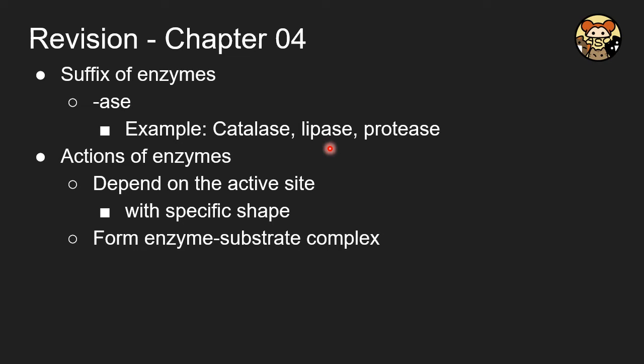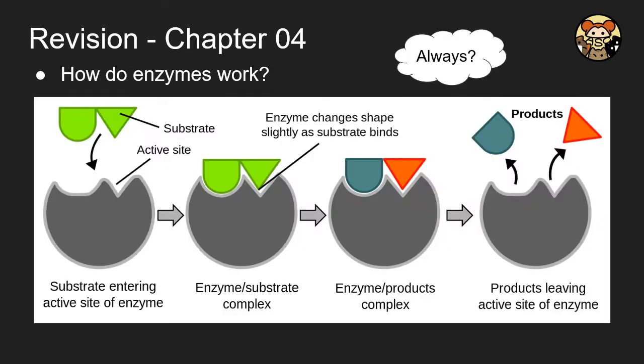For action of enzymes, it depends on the active site with its specific shape. It can catalyze the related reaction, and its method is to form the enzyme-substrate complex. In your answers, remember to include these terms like active site, specific, and enzyme-substrate complex. So what exactly is happening? Here is a diagram illustrating how an enzyme works. At first, the green label, the substrate, will bind to the enzyme on the active site.